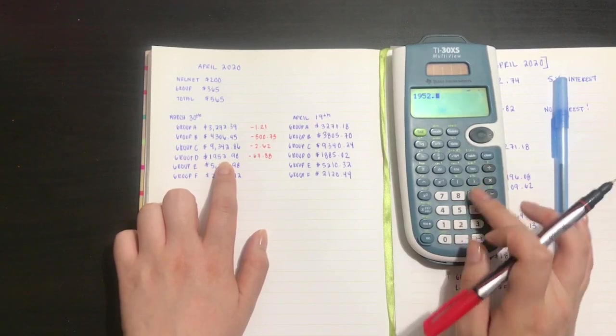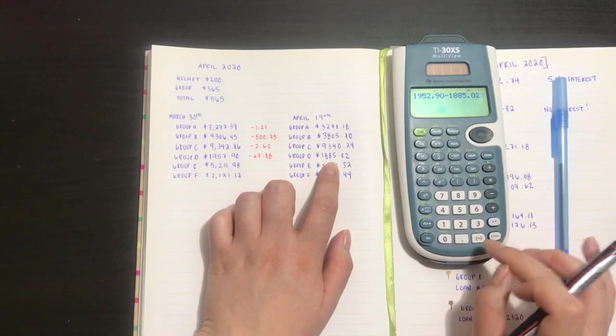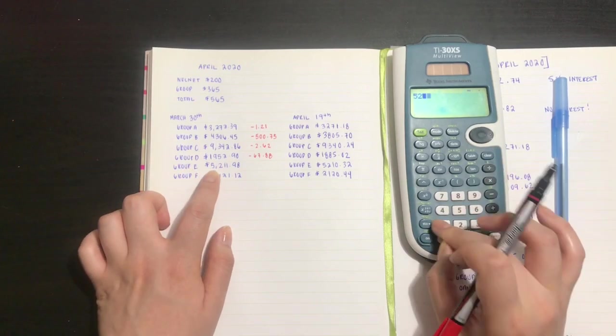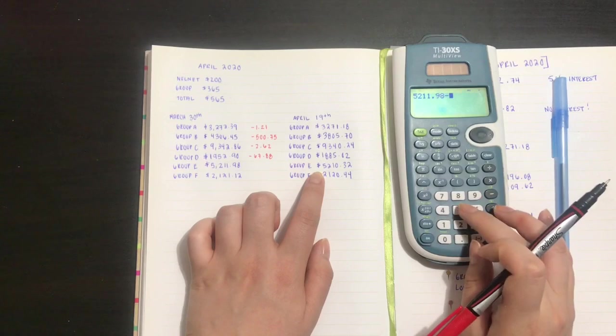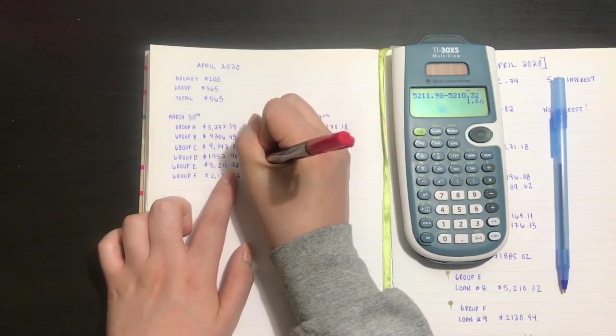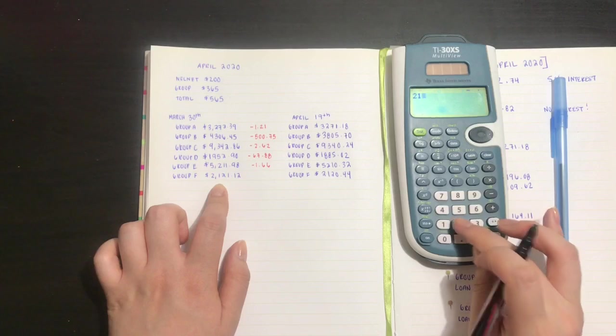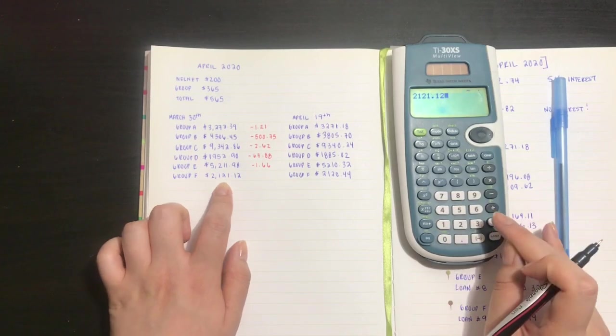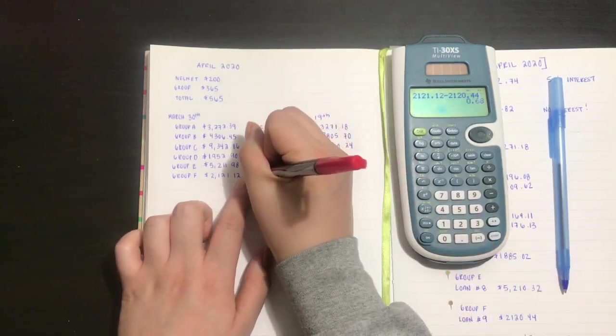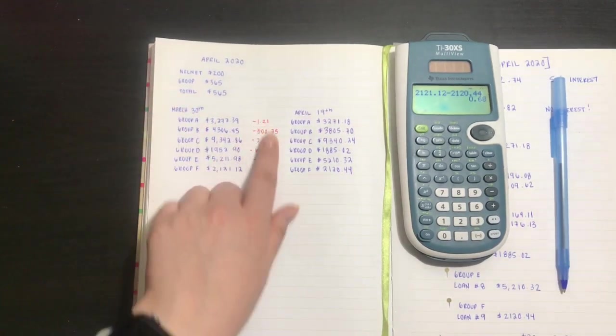Group E minus $1.66. Group F minus $0.68. So that's how much each group decreased by with my payment of $565.